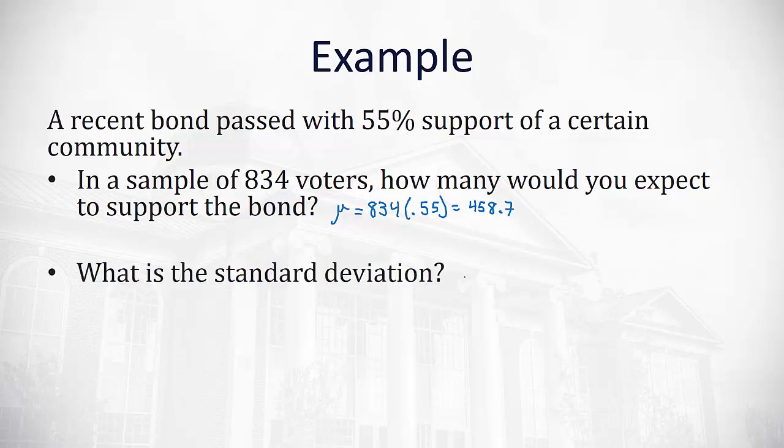If I want the standard deviation, the standard deviation is the square root of the number of trials, 834, times the probability of success, 0.55, times the probability of failure, which is 1 minus the success, so 0.45.